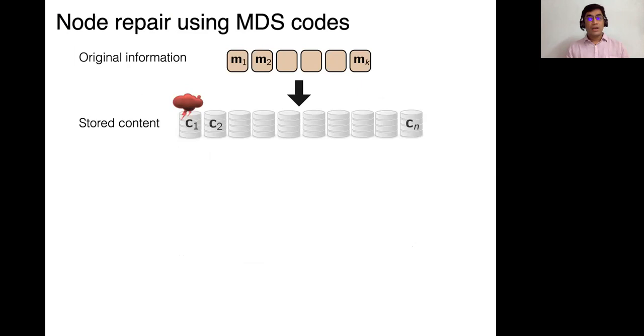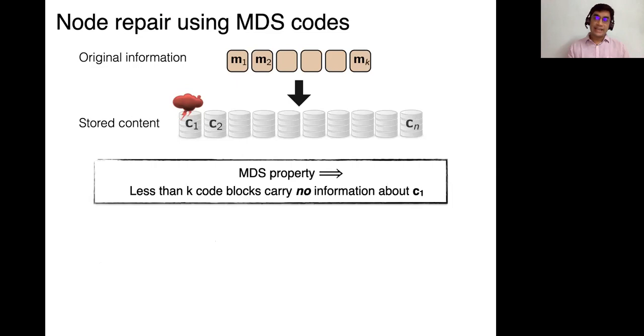So let's come back to this node repair problem. If you use an MDS code, and let's say the first symbol C1 goes missing, then the MDS property actually works against you, because the fact that any K nodes suffice to recover the full message actually also shows that if you contact less than K code blocks, they actually will carry no information whatsoever about C1. So in some sense, you will have absolutely no locality. And here, I should say that in these applications, K should be thought of as kind of big compared to N, pretty close to N, because we don't want to add too much redundancy. So K is basically like N minus some small constant. So you really have to, if you contact fewer of them, then you don't get any information.